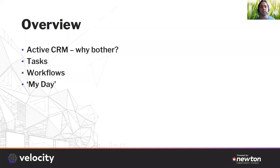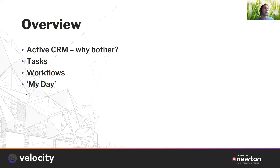Alright, I hope everybody can see my screen. Here's an overview of what we will be looking at today. We're going to look at the idea of why you should bother with active CRM, how it helps you as opposed to passive CRM or just sending out emails or texts on your own. We will then focus on the two different types: tasks and workflows. Lastly, we will look at My Day, which is the part of Velocity you use to manage your tasks and workflows and send out communications to your clients.